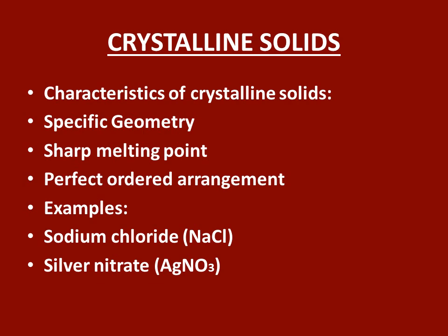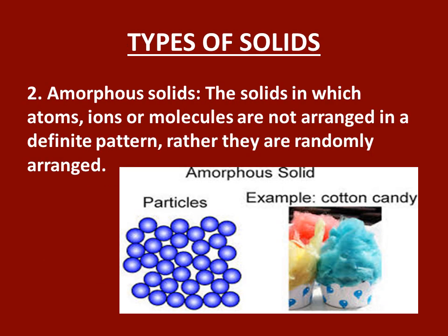Characteristics of crystalline solids: crystalline solids have a specific three-dimensional geometry as the particles are arranged in fixed positions. The solids have sharp melting points and they have a perfect ordered arrangement. Examples of crystalline solids are sodium chloride NaCl and silver nitrate AgNO3.